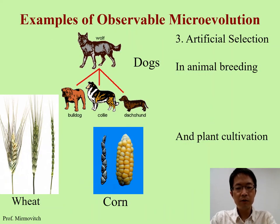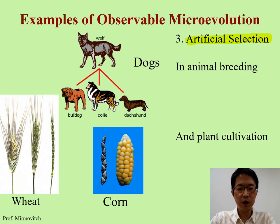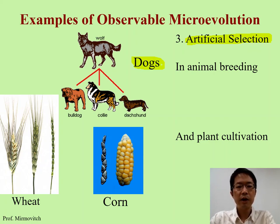Another example of microevolution is what we call artificial selection. Artificial selection — when I teach about biology I usually give people the example of dogs. Dog breeders are famous for artificial selection. They breed dogs according to so-called customer preference, meaning our preference.